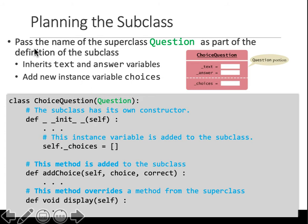This is the way — you pass the name of the superclass as part of the definition of the subclass. Remember previously we defined a class as 'class Question:'. Now we say 'class ClassName(ParentClass):' — instead of empty parentheses, you give the name of the parent class. So we can read this as: class ChoiceQuestion inherits from Question.